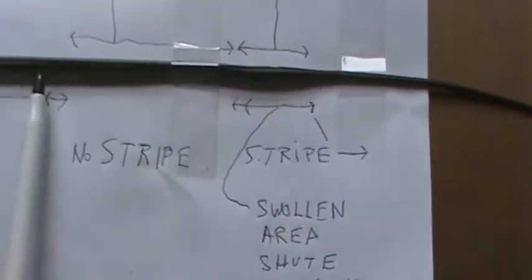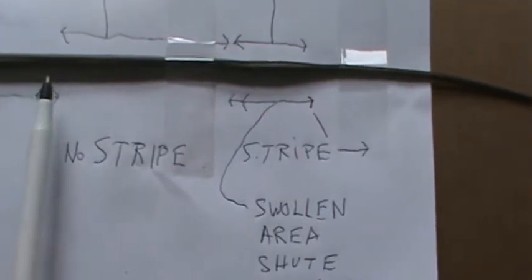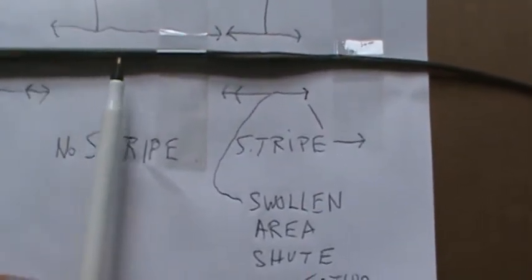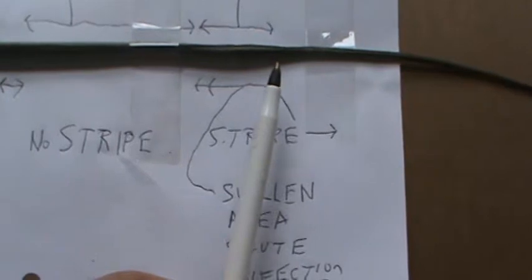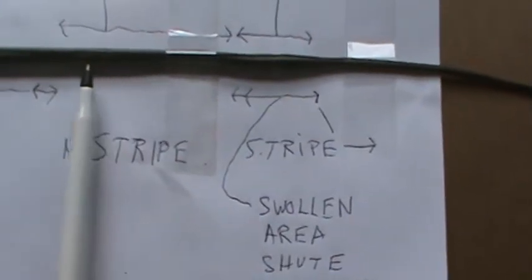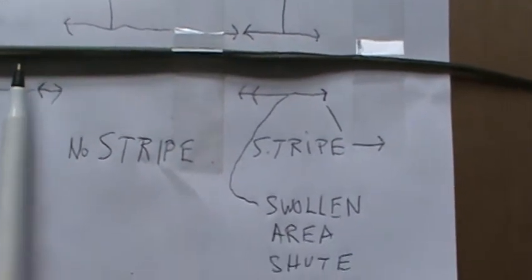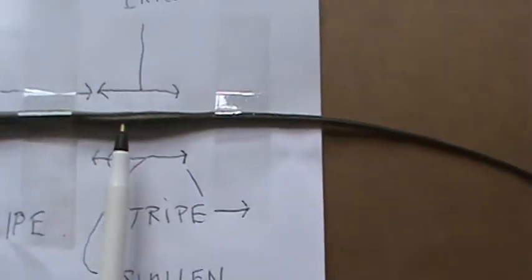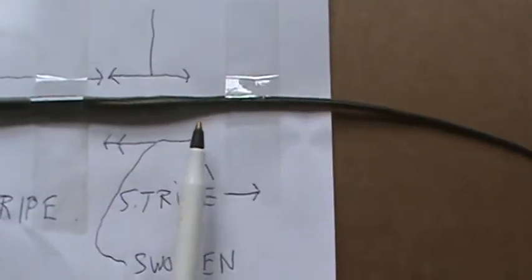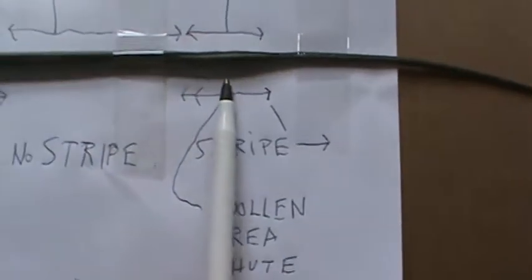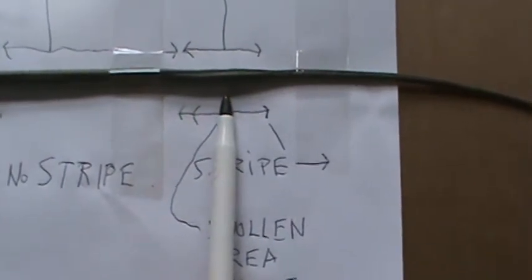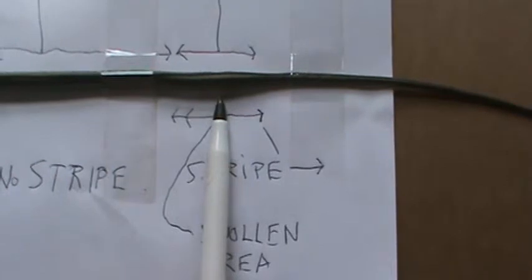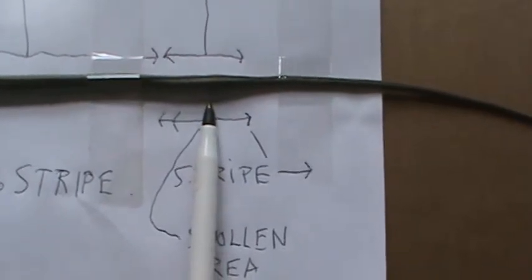This part you can tell is undernourished and skinny from not being able to expel its waste. So it's not only thinner but it has no stripe from here to here and here's the swollen spot which is the chute is directly under here which is also swollen and pussy.